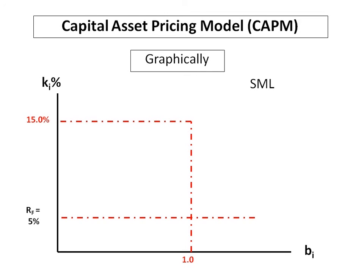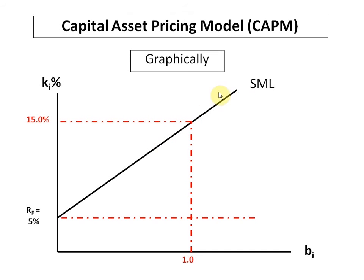We locate two points in this graph space. The first point is where the return is 5% — equal to our risk free rate — and at this level of return, the beta is equal to 0, because we are talking about a risk free asset that has no systematic risk. The second point is where we have the market rate of return of 15% and the corresponding beta of 1. We then join these two points and extend the line, and what we get is the Security Market Line, or SML.